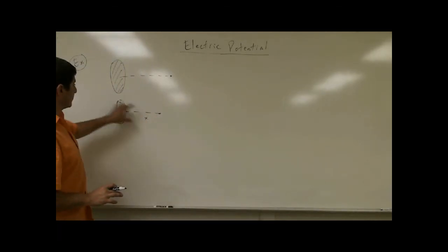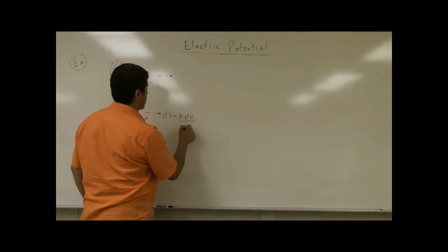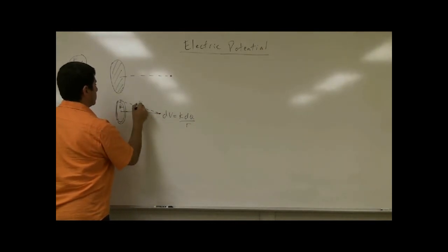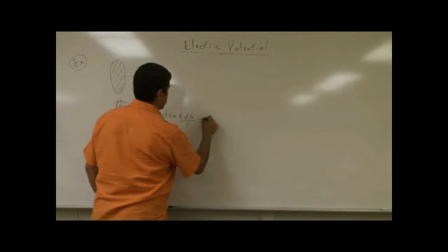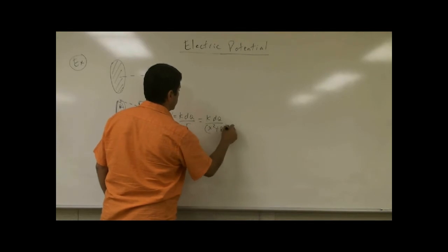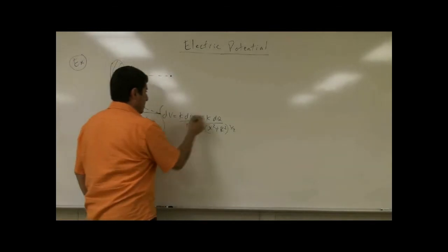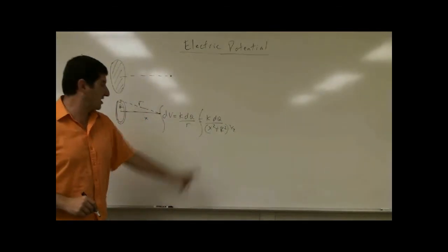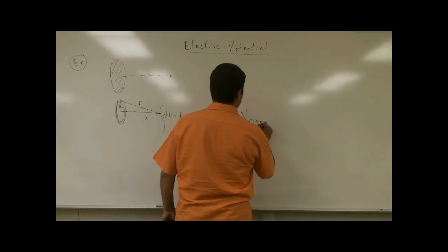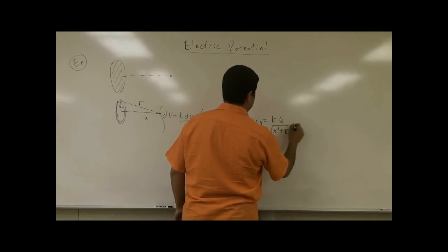Every single element of the ring creates a potential there. dV is equal to k dq over r, where r is the distance from each element, and therefore it's equal to k dq over the square root of x squared plus r squared. And since it's all equidistant, when I integrate it, I don't have to integrate any of these things — they're all constants. So the potential of a ring comes out to equal k q over the square root of x squared plus r squared.